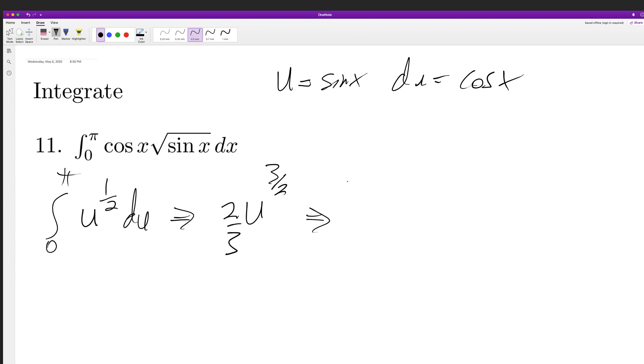Substitute back in. So we'll have two thirds sine of pi raised to the three halves minus sine of zero. I was just spacing out there because it's going to be zero. It's not three halves, raised to the three halves.